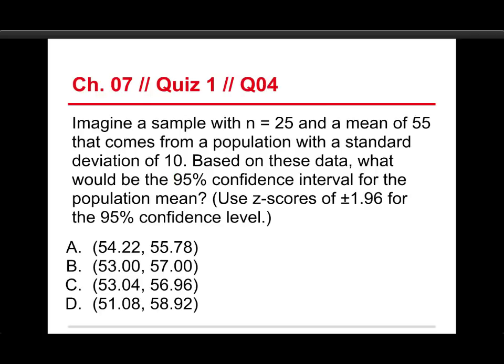All right, number four. Imagine a sample with N equals 25, so a sample of 25, and a mean of 55 that comes from a population with a standard deviation of 10. Based on these data, what would be the 95% confidence interval for the population mean? Now, because we're using the standard normal distribution for means, we can just use the z-score of 1.96. And that gives us, 95% of the normal distribution is between minus 1.96 and positive 1.96 standard deviations. Anyhow, the choices are 54.22 and 54.78, or 53.00 and 57.00, or C 53.04 and 56.96, or D 51.08 and 58.92. Well, this one involves a fair amount of calculations, so I'm going to break it down for you. But the answer is this last one. Let's see how we get there.